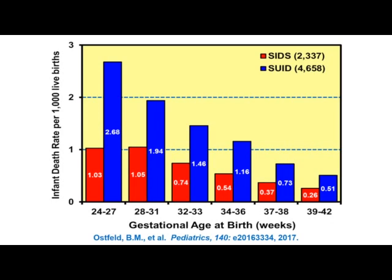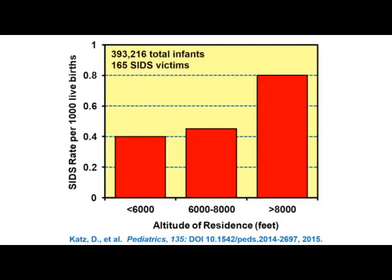Preterm infants have an increased SIDS rate — micro-premies now have about a five-times increased risk compared to full-term infants. Babies who reside at altitude greater than 8,000 feet during infancy have nearly a two-times increased risk compared to infants who live under 6,000 feet elevation, suggesting hypoxia may play a role.